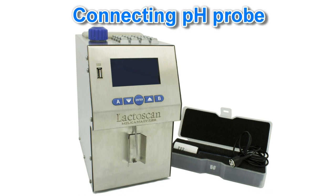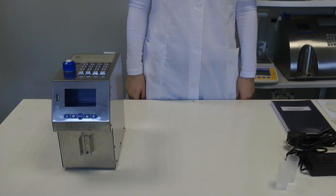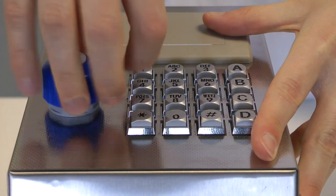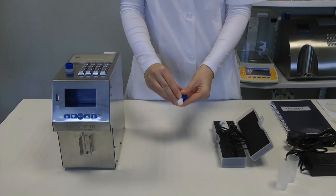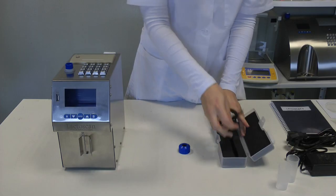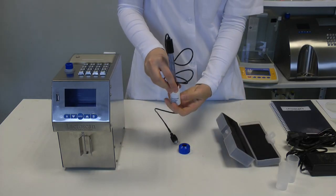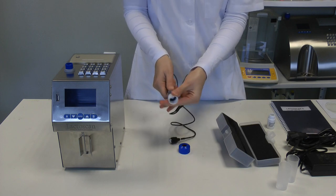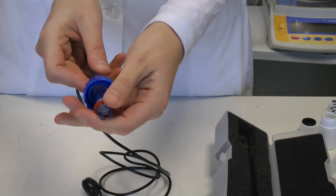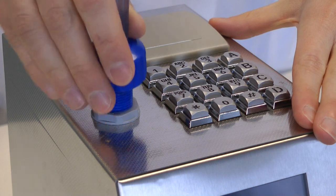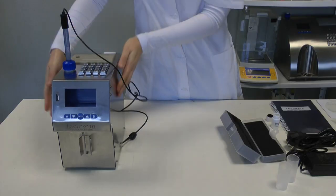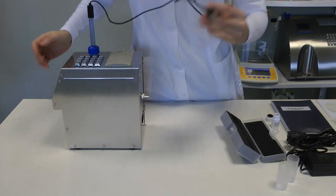If the analyzer you've ordered is with pH option, connect the probe before connecting the analyzer to the electrical network. During transportation, the pH probe is packed separately. To prepare it for work, unscrew the fixing nut turning it counterclockwise. Remove the cap. Carefully put the pH probe. Pay attention not to damage the gasket or ring. Put the probe with the gasket and screw it. It is very important to tighten the fixing nut tightly. Pay attention that no air enters the system. Connect the pH probe to the connector.